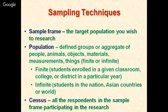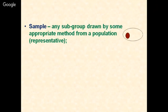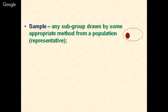Students enrolled in a given classroom, college, or district in a particular year represent a finite population, whereas students across Asian countries or the world represent an infinite population. Another term is census — similar to population — where all respondents in the sample frame participate in the research. Coming to the concept of sample: any subgroup drawn by some appropriate method from a population is a sample, representing the population because each member has an equal probability of being selected.